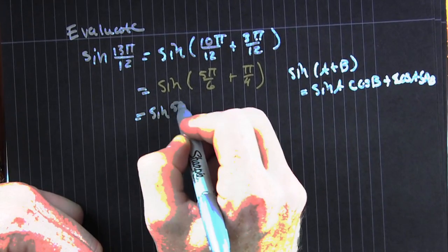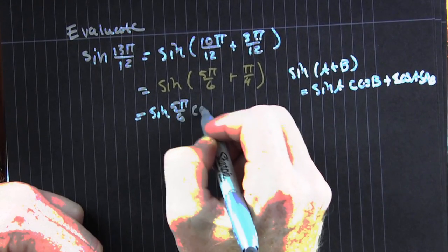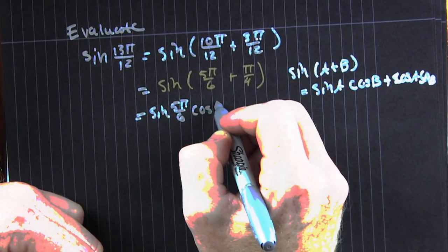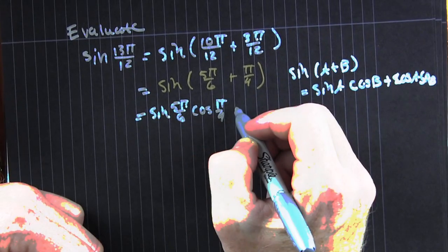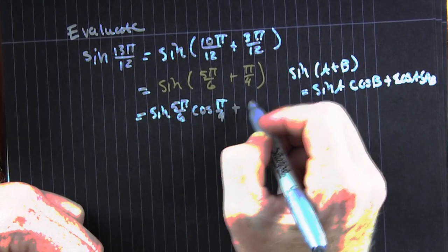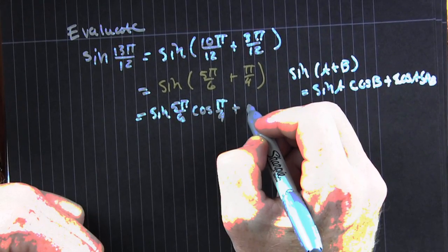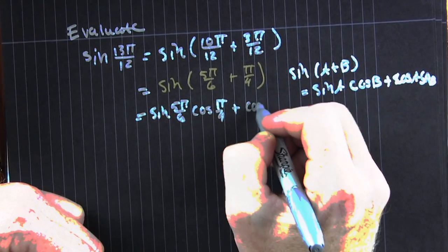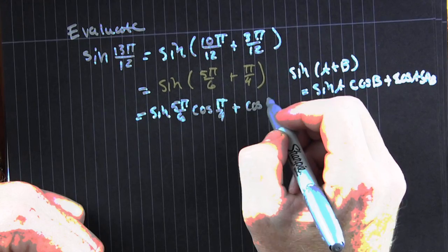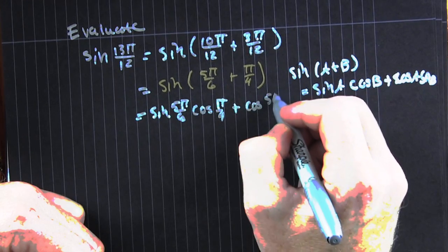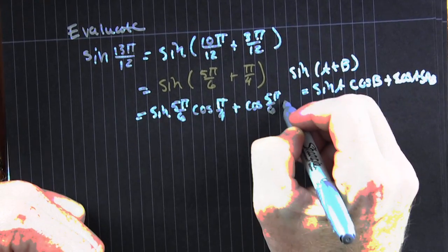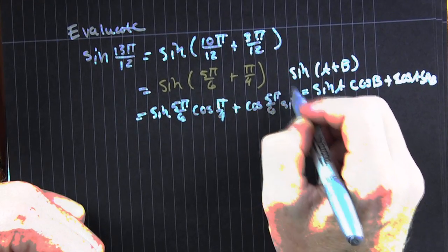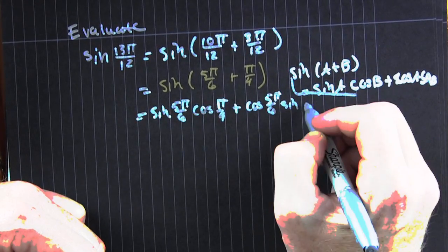We're going to put those in exactly. We're going to match our a's and we're going to match our b's. That's b. And then — finish him.